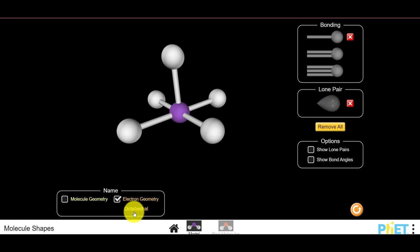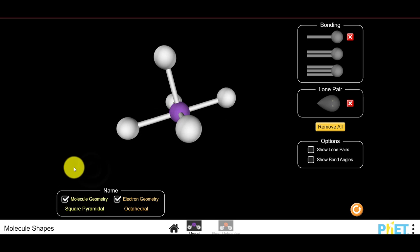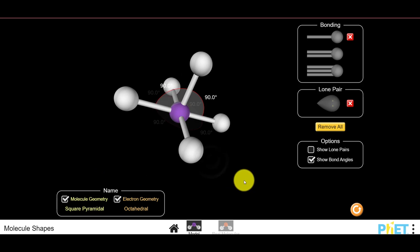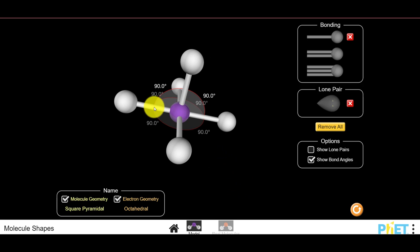I can hide the lone pair, and you end up with something that looks like this. It still has an electron geometry of an octahedral shape, but the molecular geometry, or the name of this shape, is a square pyramid. It's a pyramid shape but with a square base. The bond angles are still 90 degrees or 180 degrees if you were to go across.